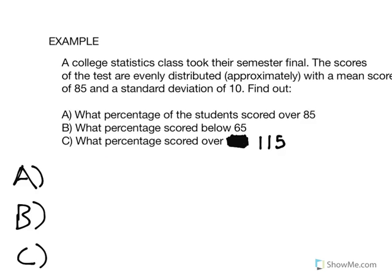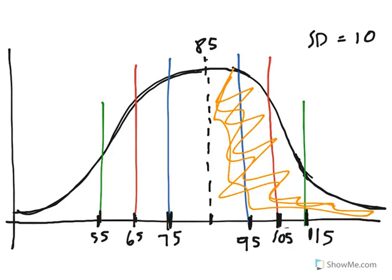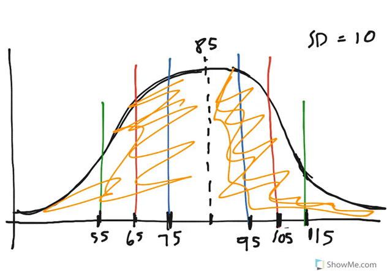Let's figure out part A first, which is the easier of the three problems. It says: what percentage of the students scored over 85? If you look back at the graph, you can see that this is somewhat easier because 85 is the exact center. It's the mean of all the test values. All you have to remember is that since it's in the middle, 50% of the test scores are above and 50% of the test scores are below 85.